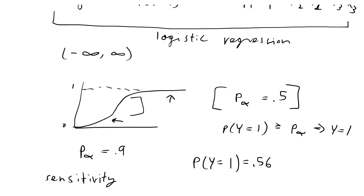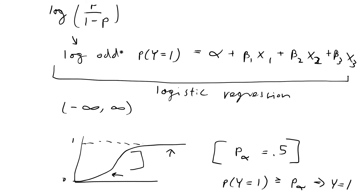One last thing before the example: once we do the transformation on the left-hand side, we get that it equals a linear combination of terms on the right-hand side. So logistic regression is not directly a linear model, but it belongs to a family of models known as GLMs, or generalized linear models — where a function of an outcome variable equals a linear combination of terms, requiring some kind of function on the left-hand side.